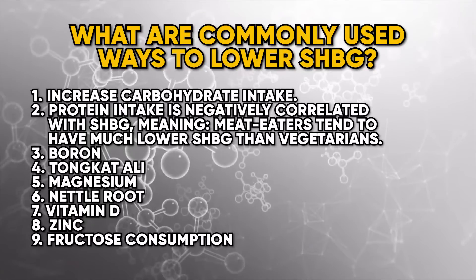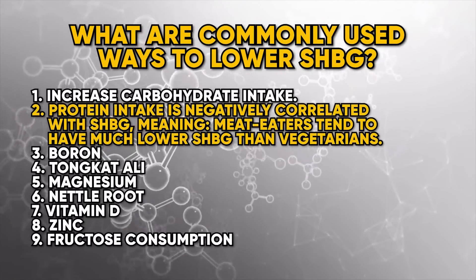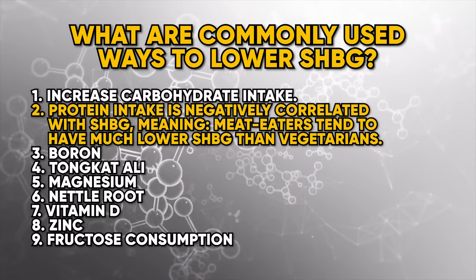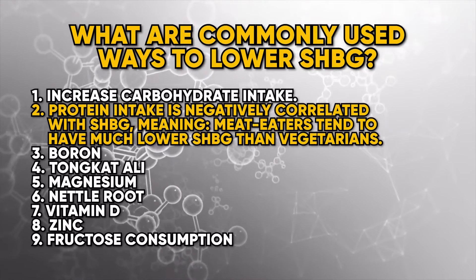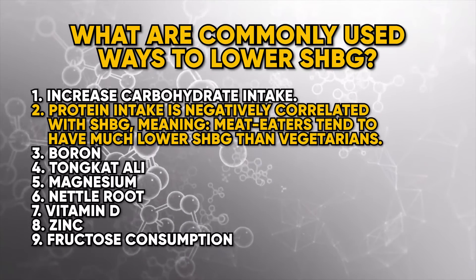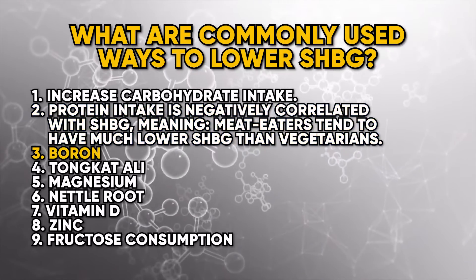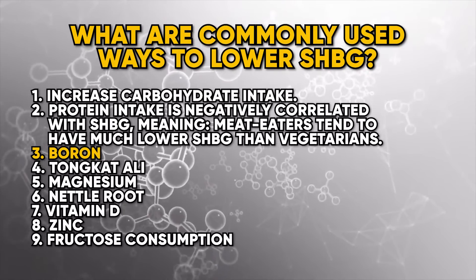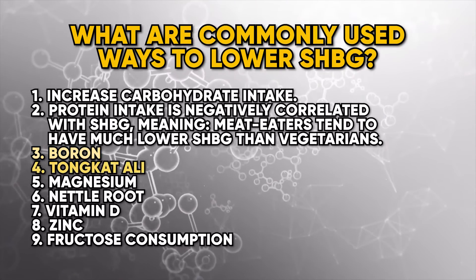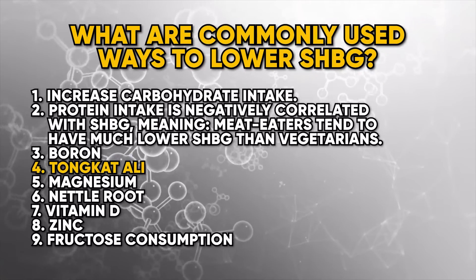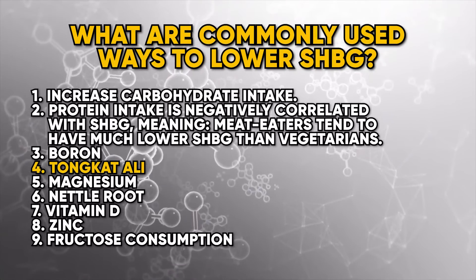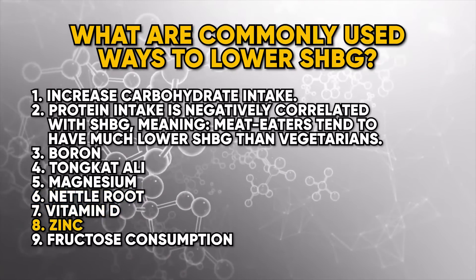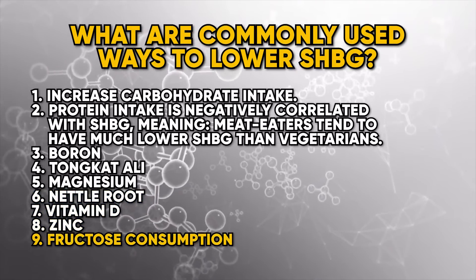Protein intake is also negatively correlated with SHBG, meaning that meat eaters tend to have much lower sex hormone binding globulin than vegetarians. Next up we have boron — at a dosage of around 10 milligrams per day it can lower SHBG. Tongkat Ali is a herbal supplement known to lower SHBG. We also have magnesium, nettle root, vitamin D, zinc, and fructose consumption as strategies to lower SHBG.